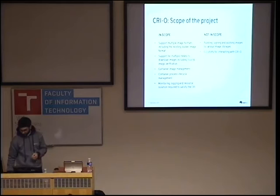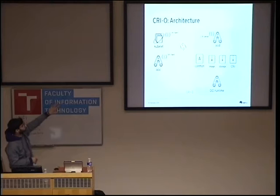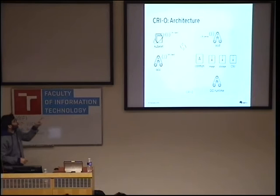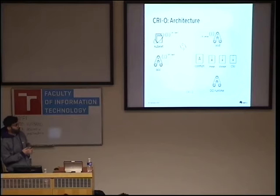Before diving into CRIO architecture, there are two pieces: the Kubelet and OCIC which is the small client, and this is the only means to talk to CRIO. As for CRIO architecture, we have OCID which is the server, listening on a Unix socket and taking requests from the Kubelet and OCIC for runtime and image management.